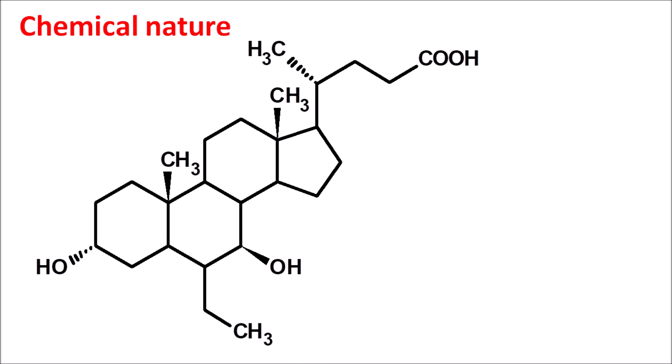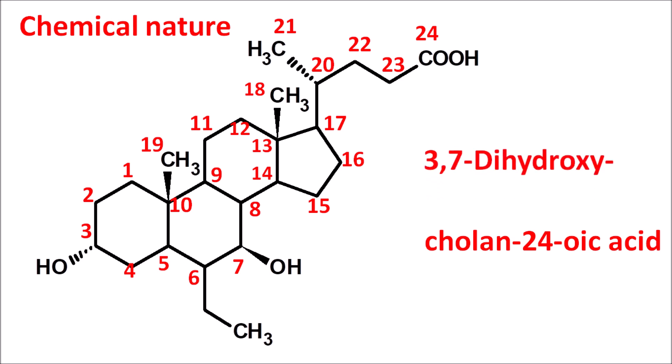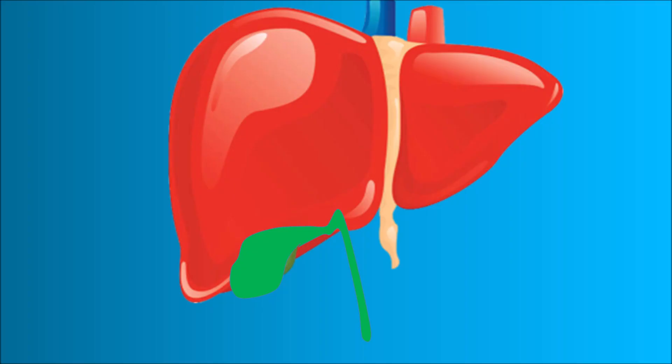Let us look at the chemical nature of obeticholic acid. The suffix is written as 'cholan-24-oic acid,' where the carboxylic acid is present at the 24th position. Just like UDCA, this drug has hydroxyl groups at the 3rd and 7th positions, written as 3,7-dihydroxy. In addition, it has an ethyl group at the 6th position attached in alpha configuration — that is, 6-alpha-ethyl. This constitutes the complete name of obeticholic acid.